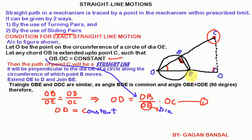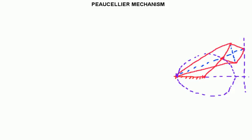Exact straight line motion mechanisms with turning pairs are described as the Peaucellier mechanism and the Hart mechanism. Now we will be discussing the Peaucellier mechanism. The Peaucellier mechanism is a straight line motion mechanism in which we have 8 links, as shown in the figure.